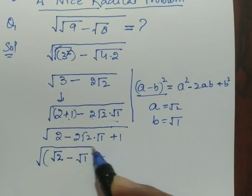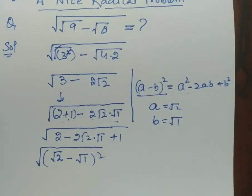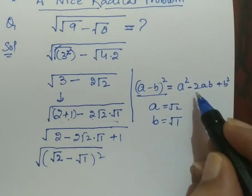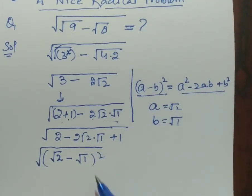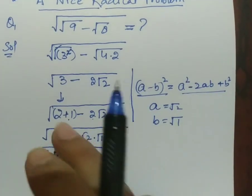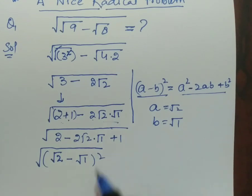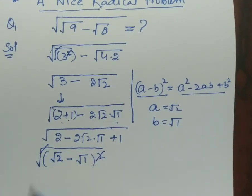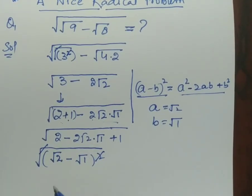If I want to open this by using this identity, so fine then I got this again, this equation. Now the square root and root got cancelled. There is remaining root 2 minus root 1.